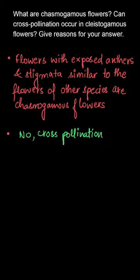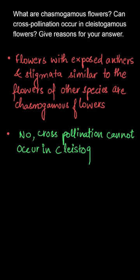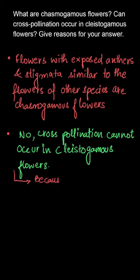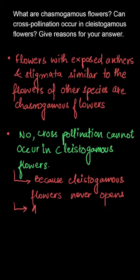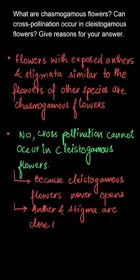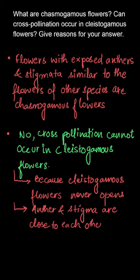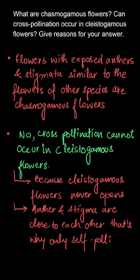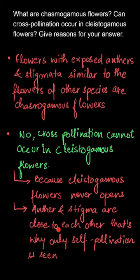In cleistogamous flowers, we do not see cross-pollination at all. The first reason is because the flower does not open at all. The anthers and the stigma lie close to each other, which is why only self-pollination is seen. When the anther dehisces inside the flower, the pollen grain comes into close contact with the stigma to effect self-pollination. Therefore, there is no chance of cross-pollination and only self-pollination occurs.